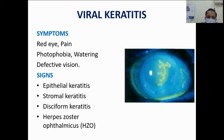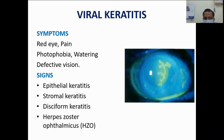Signs of viral keratitis include involvement of either the epithelial layer or the stromal layer. If it is in the epithelial layer it can take up stain, but if it is in the stromal layer the cornea will not take up stain — for example, in stromal keratitis you will see stromal edema, or it can be disciform keratitis. In herpes zoster ophthalmicus the signs are slightly different; apart from corneal or ocular signs there will be cutaneous signs also.